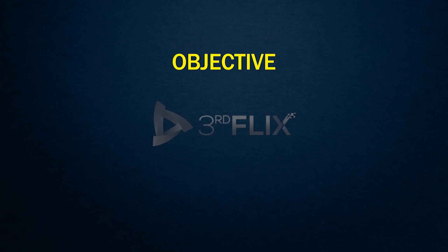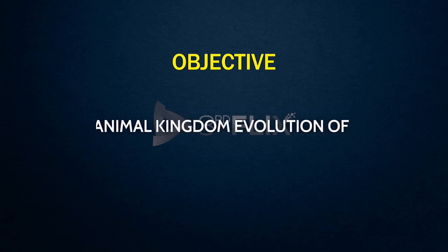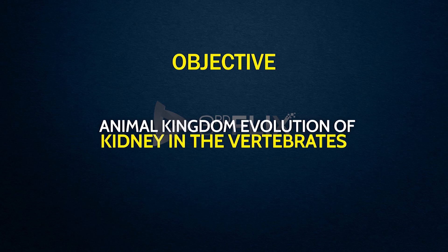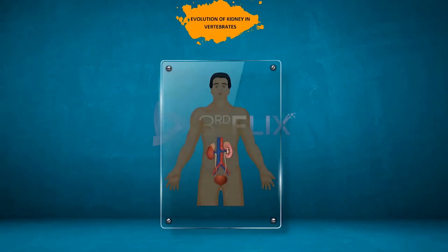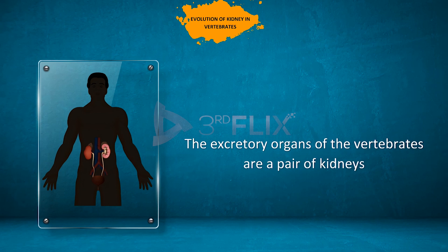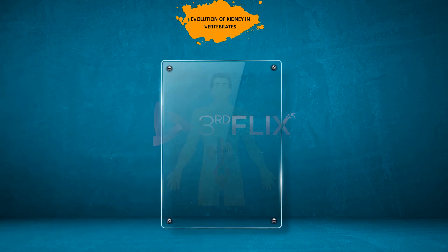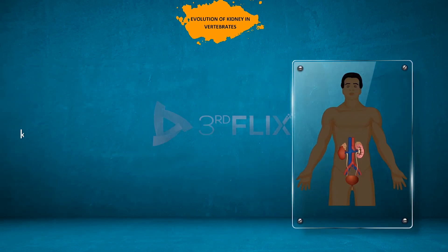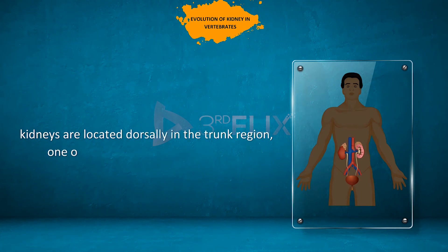Objective: to study about the animal kingdom and the evolution of the kidney in vertebrates. The excretory organs of the vertebrates are a pair of kidneys. The kidneys are located dorsally in the trunk region, one on either side of the dorsal aorta.